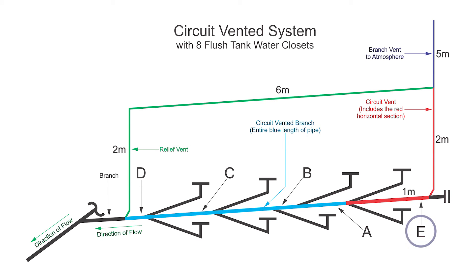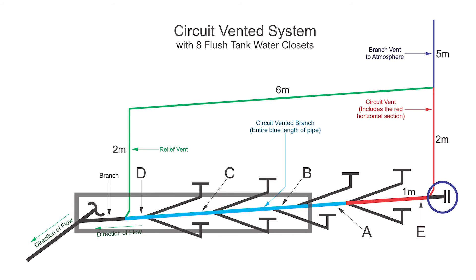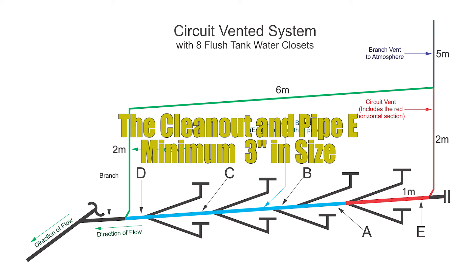Pipe E is just part of the circuit vent. However, just to the right of it is a clean-out fitting. This clean-out needs to serve the 4-inch pipe that goes from B through to the end, so that clean-out needs to be a minimum of 3 inches in size. Therefore, pipe E needs to be a minimum of 3 inches.